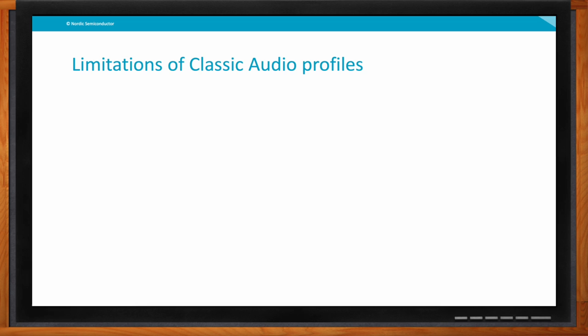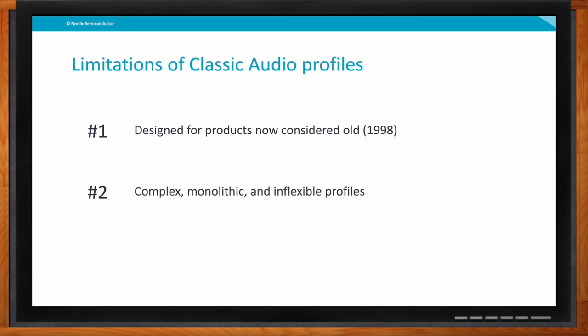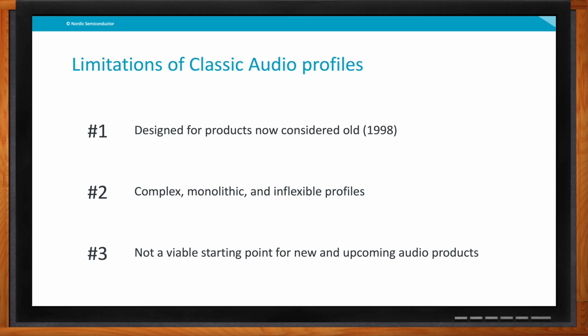The biggest challenge is that the Bluetooth we're using for most of our audio devices is quite old. It's designed for old products and old use cases — this has been around since 1998. All of the profiles and use cases are old use cases, so we have very complex, monolithic structures when it comes to the profiles, which makes them very inflexible. When looking at making a new spec for Bluetooth Low Energy Audio, it was pretty clear from the start that Bluetooth Classic isn't a good starting point. So we started from Bluetooth Low Energy and added audio to that.